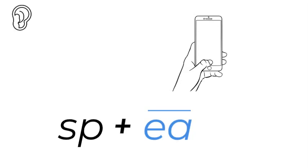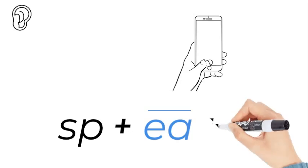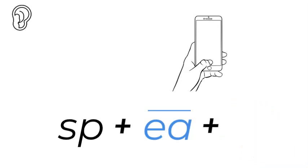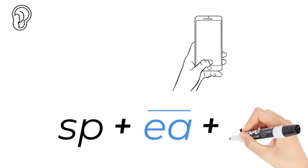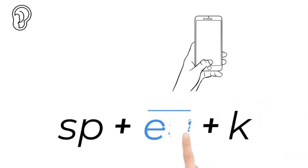First one does the talking, second one keeps the walking. You can't hear the A — SP, E — you only hear the E. And because it's a long vowel sound, you write a K, just a K.